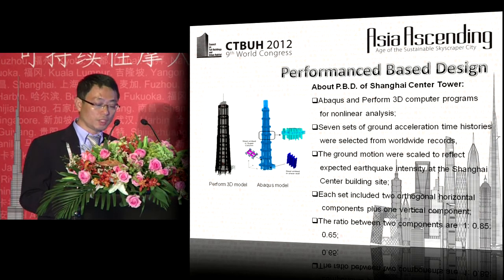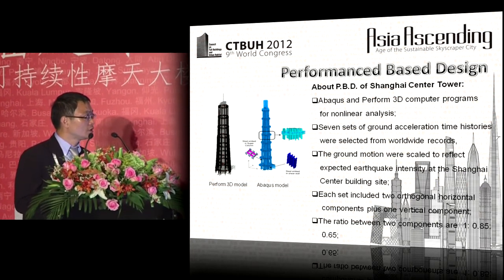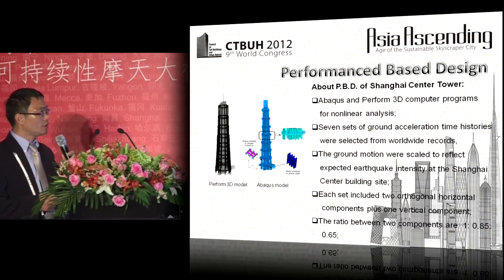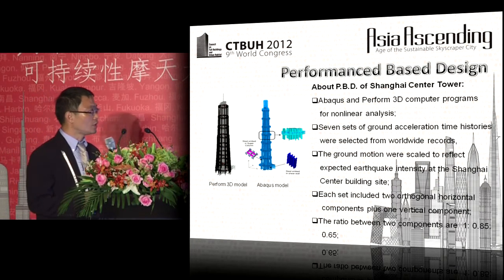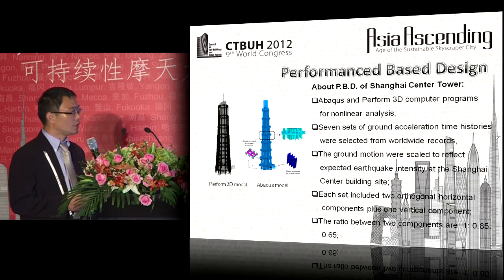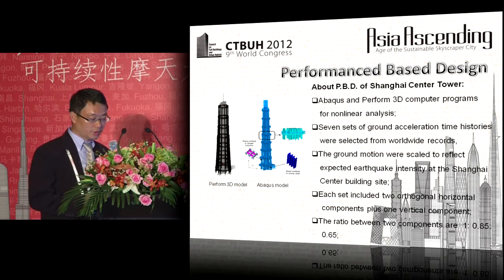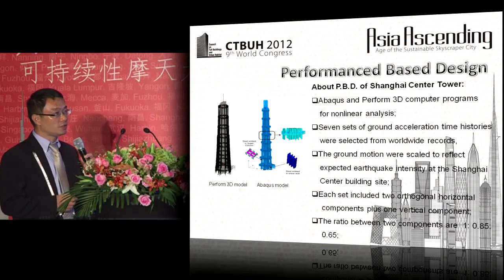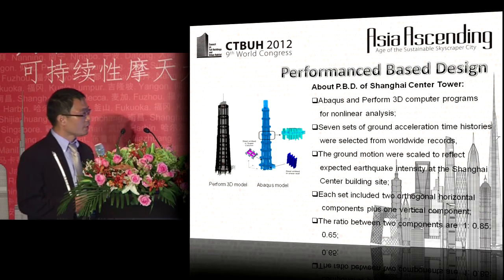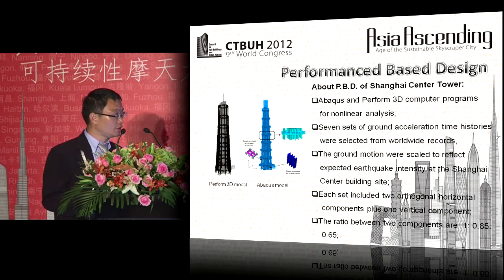For PBD, we adopted two programs: APACUS software and Perform 3D for non-linear analysis. For seismic wave selection, from different sites and seismic records, we chose waves aligned with Shanghai's site characteristics. Working with the research institute, Tongji University, and other stakeholders over more than one month, we finally selected seven sets of ground acceleration time histories from worldwide records, with component ratios of 1 to 0.85 to 0.65.